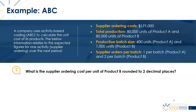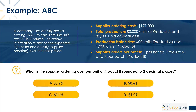What we're asked to work out is the supplier ordering cost per unit of product B, rounded to two decimal places, with answer options A through D. We need to work through a number of steps to get there, breaking it down because we've got supplier ordering across two product lines.